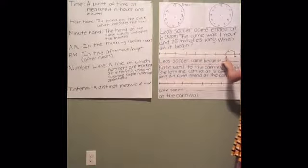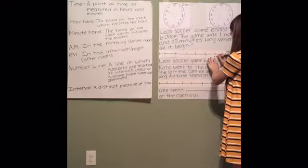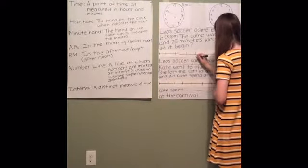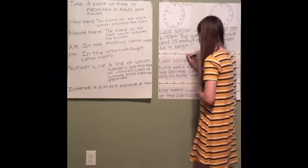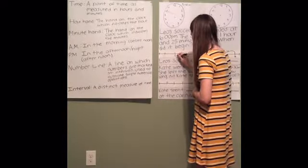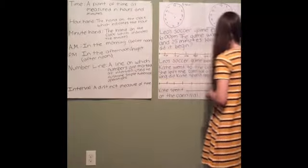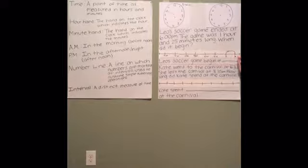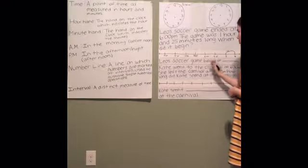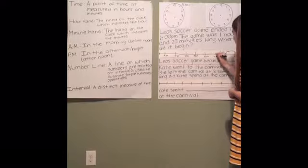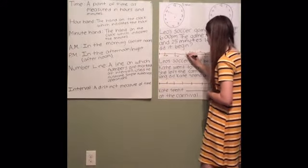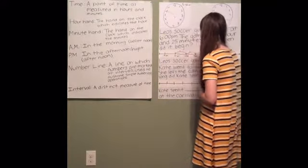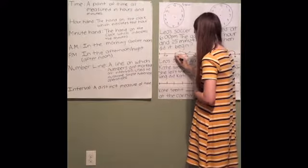Going backwards from 5 o'clock, we have 4:55, 4:50, 4:45. So now that we already have the hour figured out — because it's an hour and 25 minutes from 6 p.m. — we have to figure out the 25 minutes. So we're at 5 already, and we're going to count by 5 in intervals: 5, 10, 15, 20, 25. So now we've reached the 25-minute mark, and we've landed right here on 4:35.